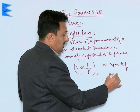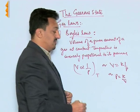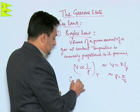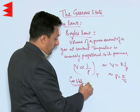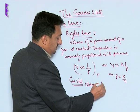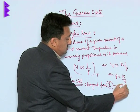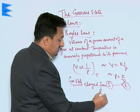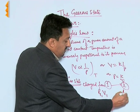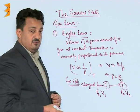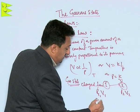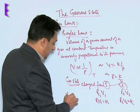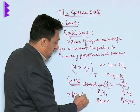We can also write P = K/V, where K is a constant. Now if a gas state is changed from state 1 to state 2, where the pressure is P1 and volume is V1, and pressure is P2 and volume is V2, we can make out that P1V1 = K and P2V2 = K. So we can write the simplified relationship: P1V1 = P2V2.